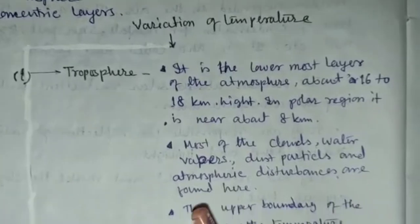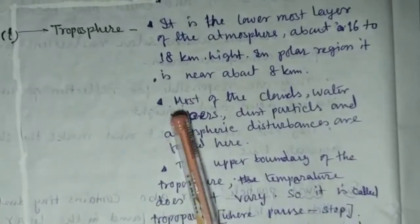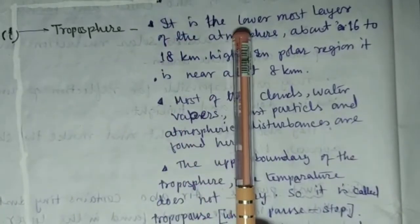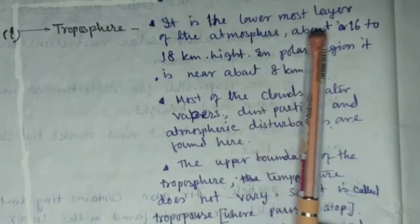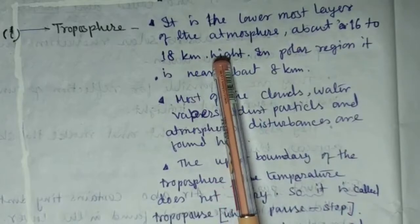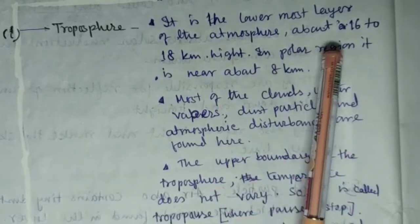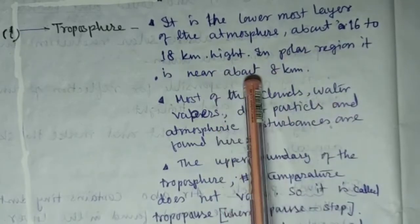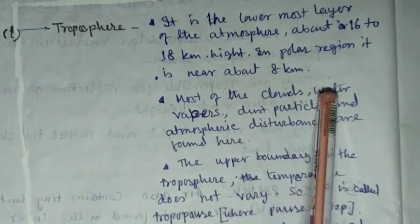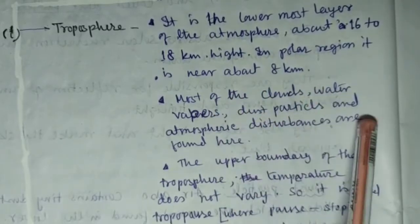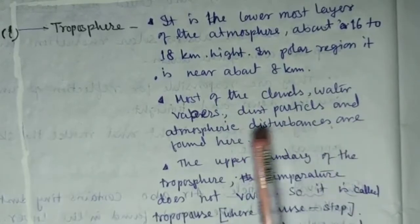Troposphere is the lowermost layer of the atmosphere, about 16 to 18 kilometer height. In polar region, it is near about 8 kilometer. Most of the clouds, water vapor, dust particles and atmospheric disturbances are found here.